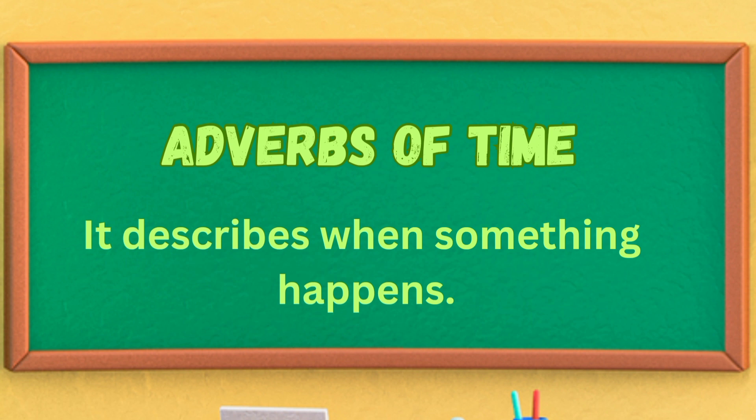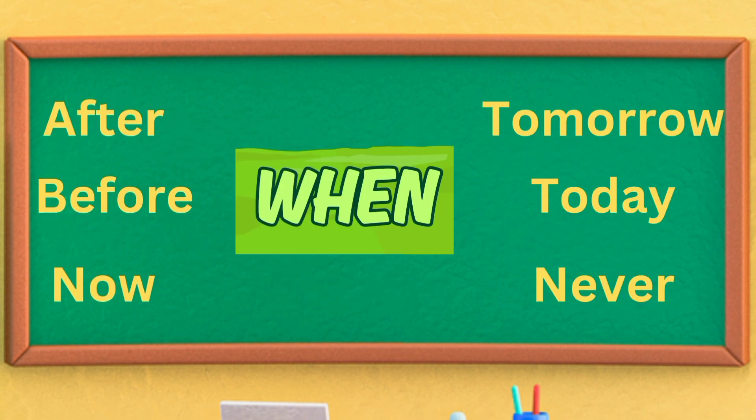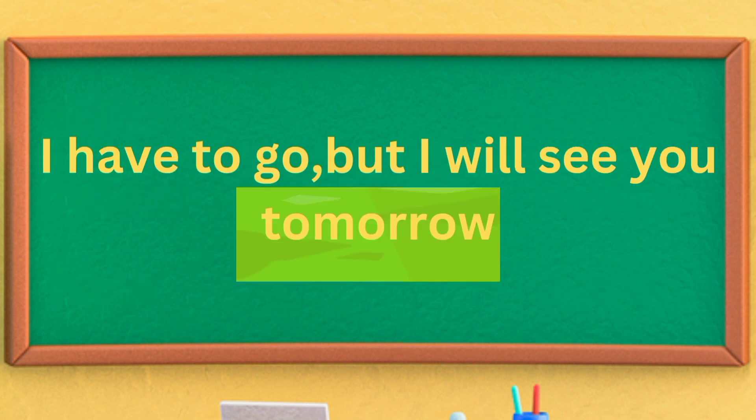Adverb of time describes when something happens — it means when the action is performed. Examples include after, before, now, tomorrow, today, and never. For example: I have to go, but I will see you tomorrow. Tomorrow is an adverb of time.